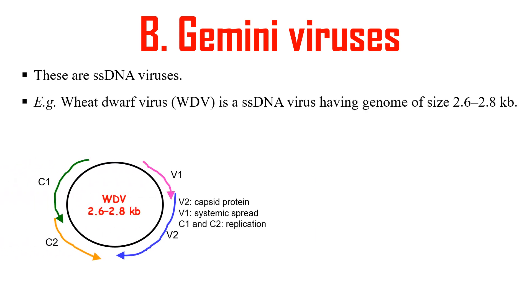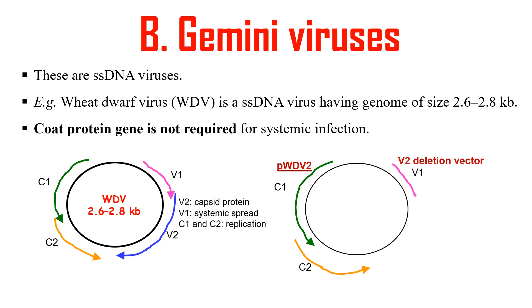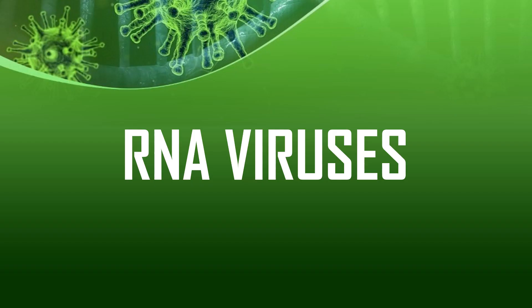An example of a gemini virus is wheat dwarf virus, which has a genome of 2.6 to 2.8 kb. As shown in the diagram, it includes V1, V2, C1, and C2 cassettes coding for specific proteins: V2 codes for the capsid protein, V1 is involved in systemic spread, and C1 and C2 are not required for replication. Since V2 is non-essential, as seen in the right-side diagram, we can replace V2 with multiple cloning sites to introduce foreign genes. In this way, gemini viruses can be used as vectors.